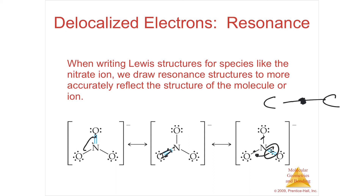These pi electrons are not stuck between two atoms. Because they're sticking out of the top and the bottom, they're essentially free to move anywhere. In the case of a resonance structure, they're jumping from one bond to the next to the next, back to the next. And they're doing it at close to the speed of light — it's just electrons flashing. It's the speed of electricity, because that's what electricity is: movement of electrons. This is called resonance.